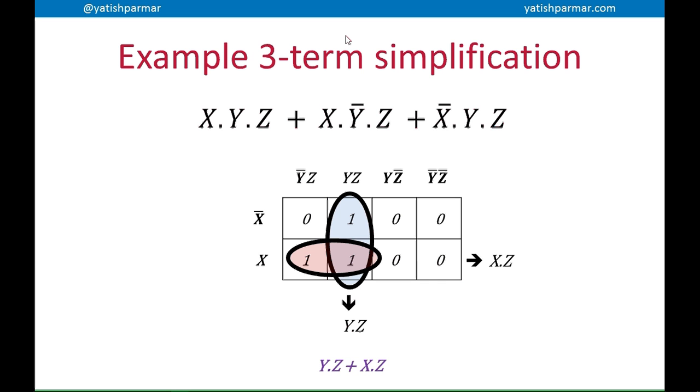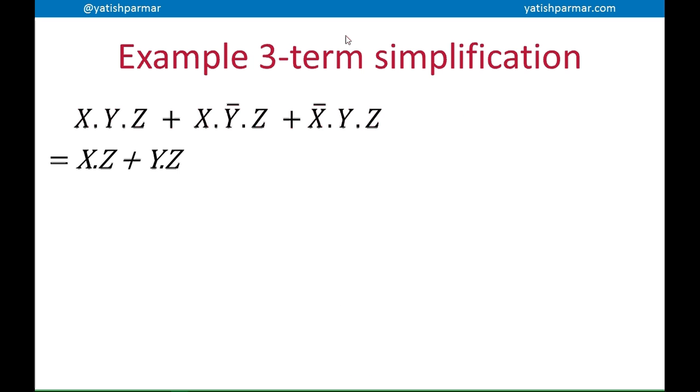So there you go. That's the expression down there at the bottom in purple: y and z or x and z. But that actually can be simplified further. And I can actually break it down into z and x or y, and that would be my simplified term. If you don't believe me, you can draw the truth table and you can work it out yourself.